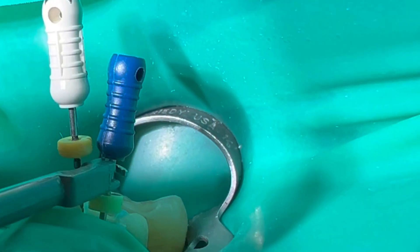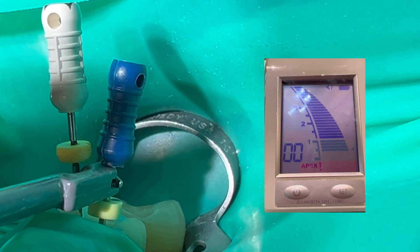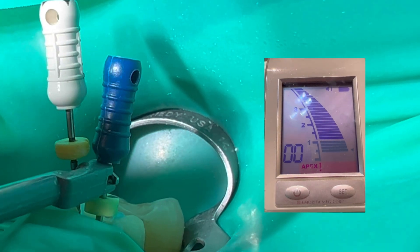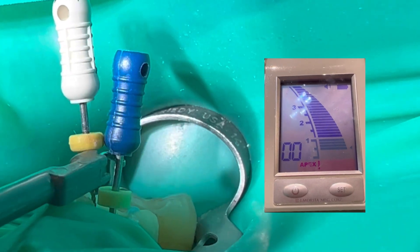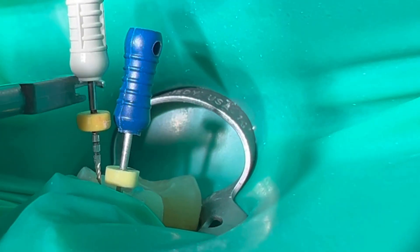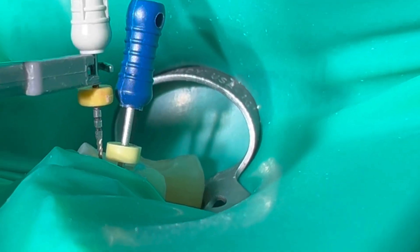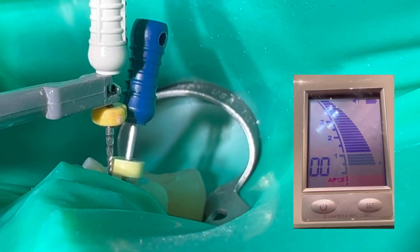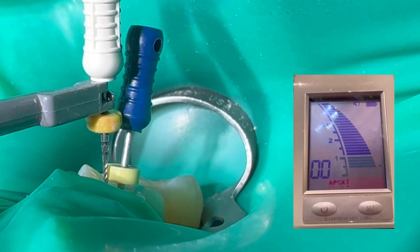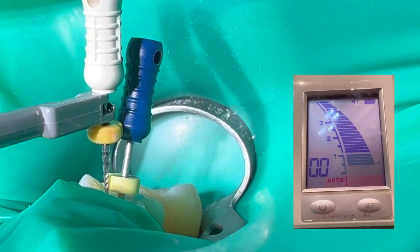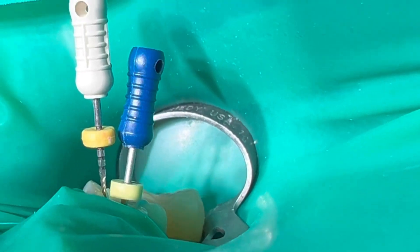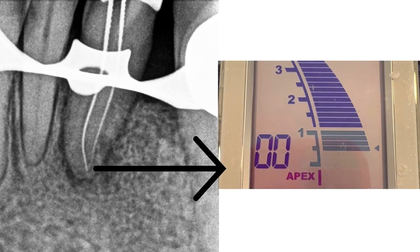We will introduce a manual file at its corresponding working length. Next, we will try to reach the second canal with a manual file at the working length achieved during its permeabilization. If, before reaching working length, the apex locator indicates that we are at working length, the canals are joining.